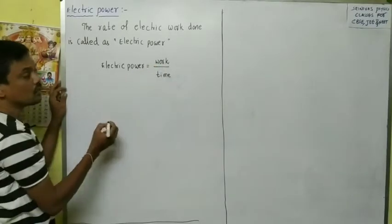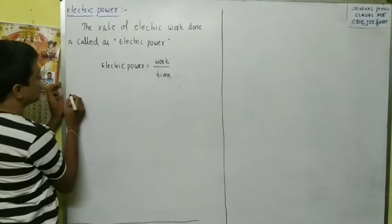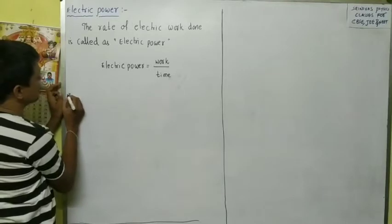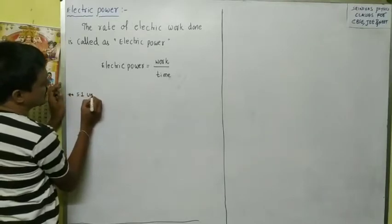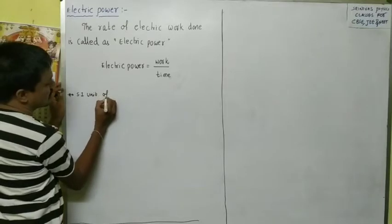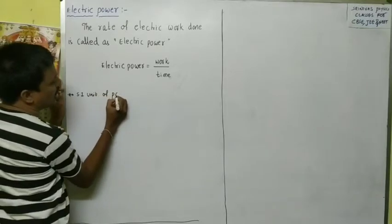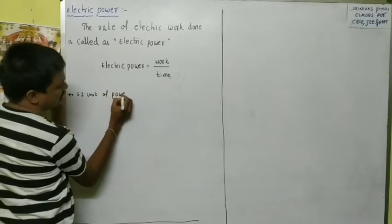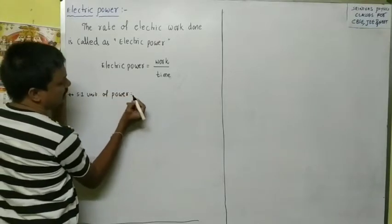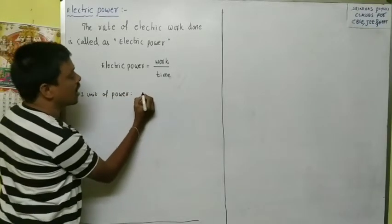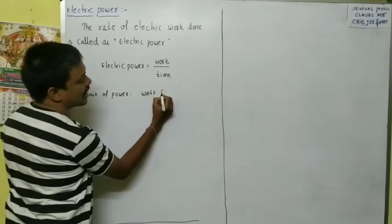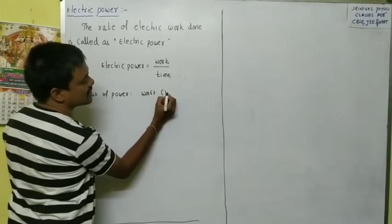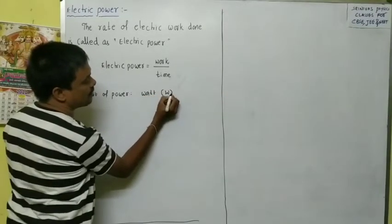What is the work formula? And what is the SI unit of power? The SI unit of power is Watt, and its symbol is capital W.